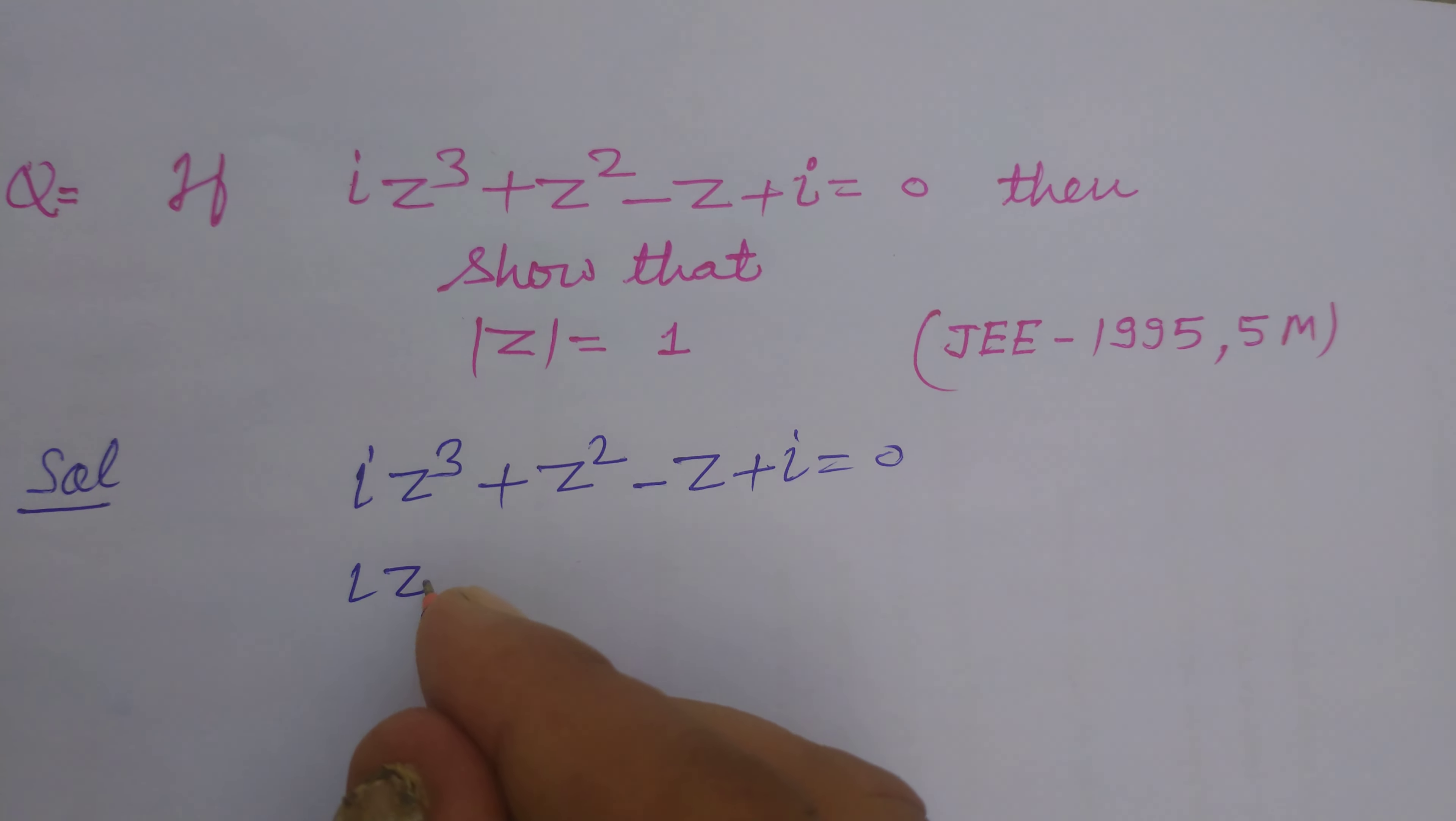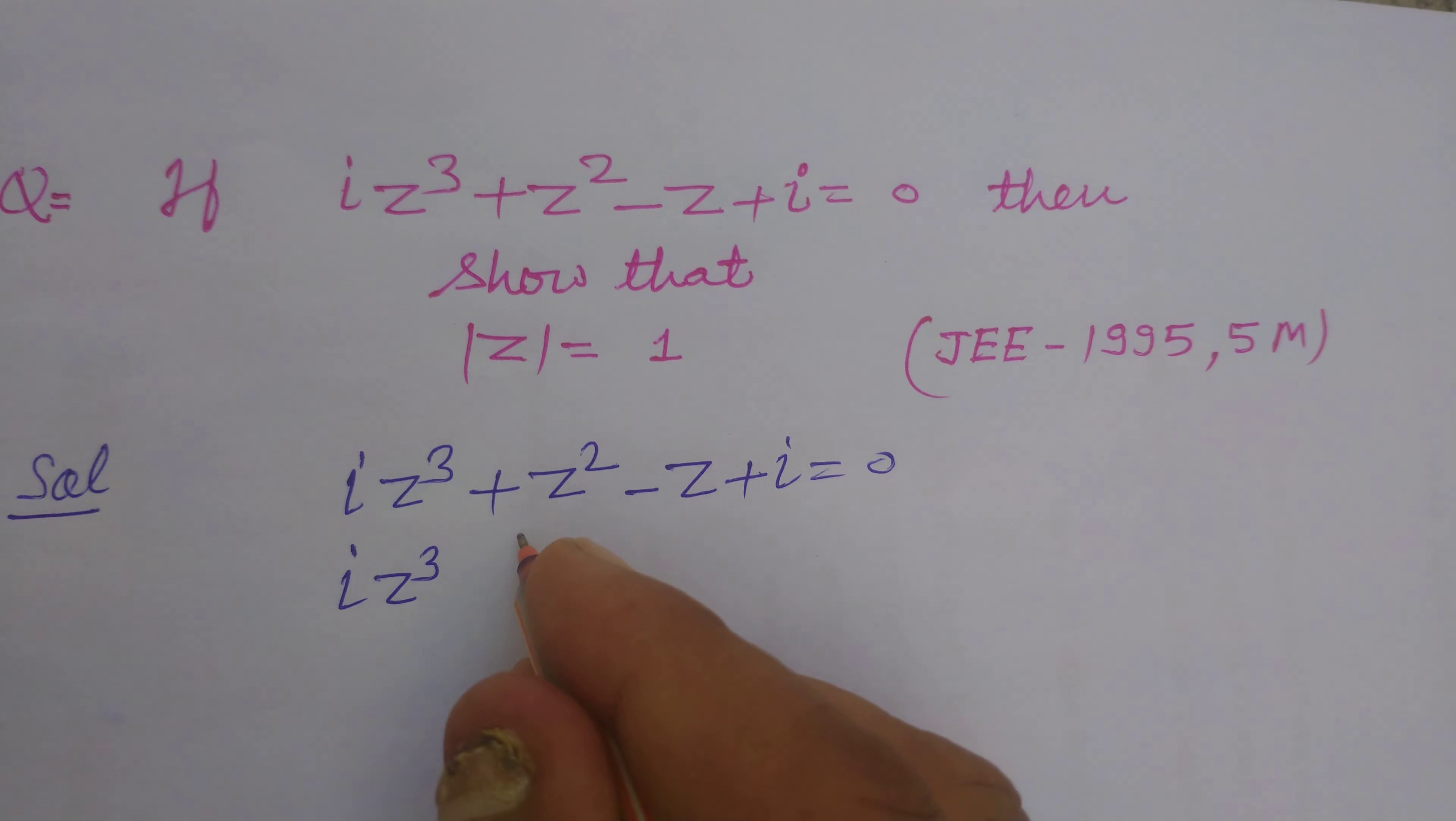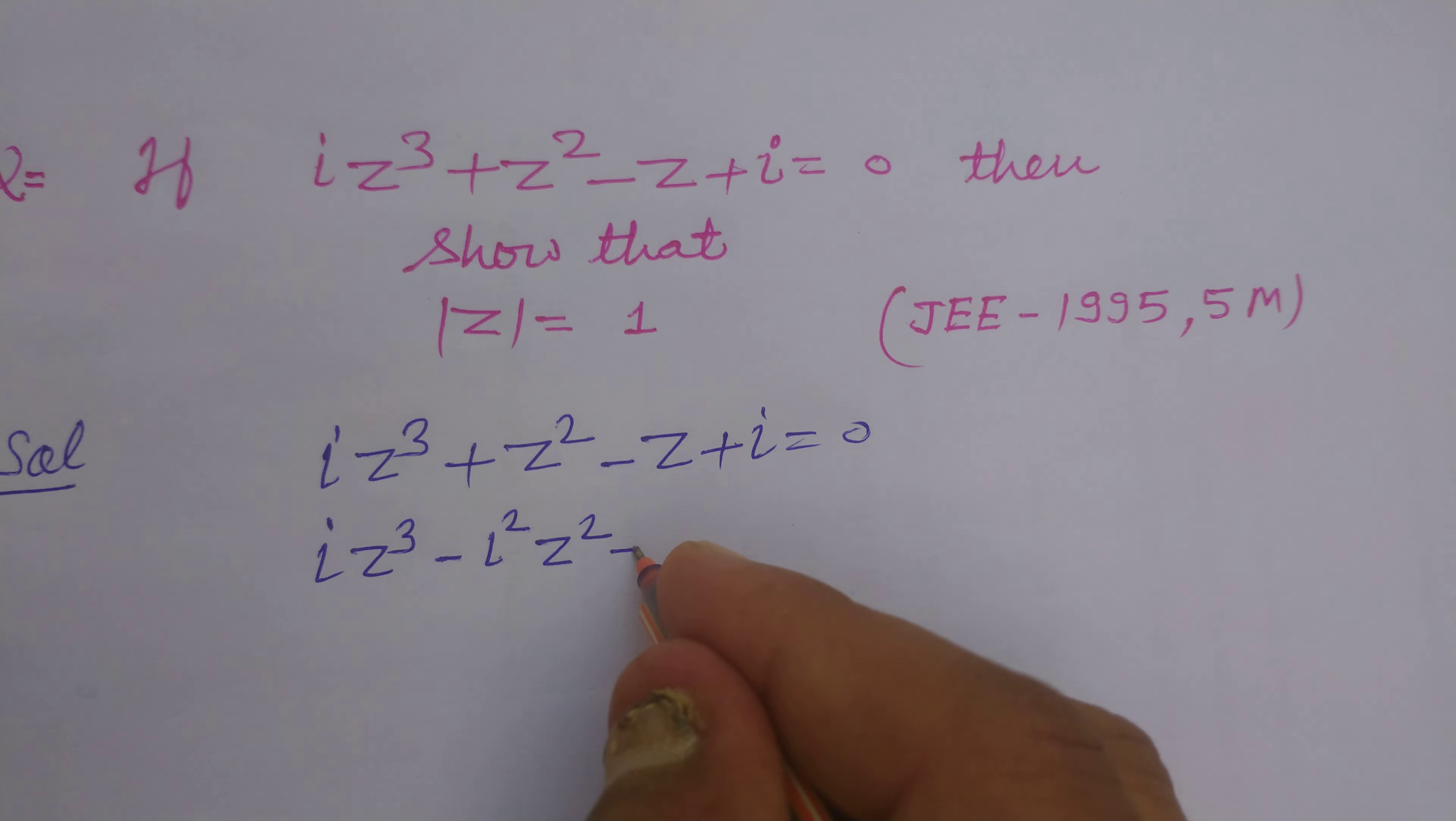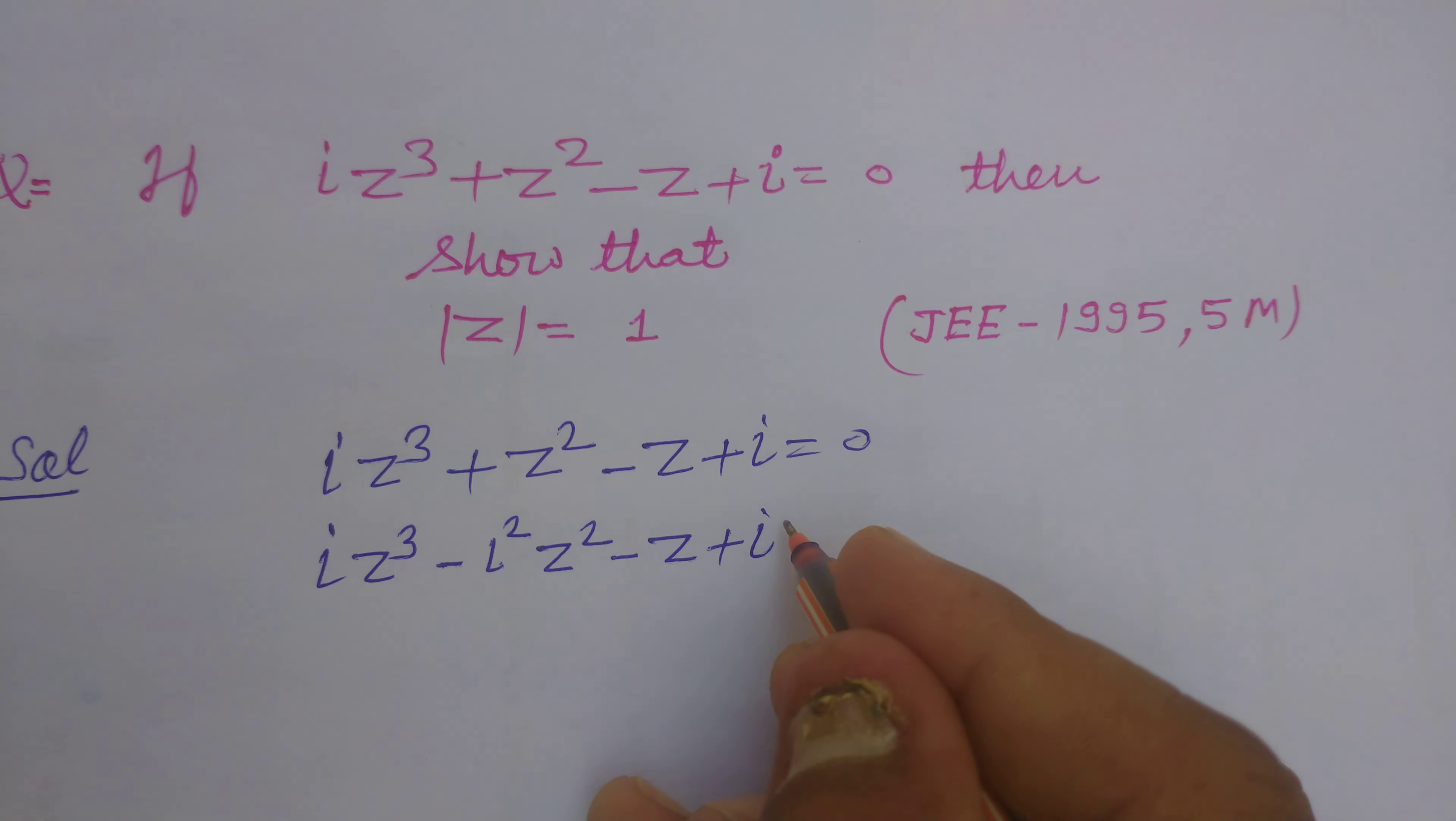So iota z cubed, we can write it as iota squared z squared minus z plus iota equals 0.